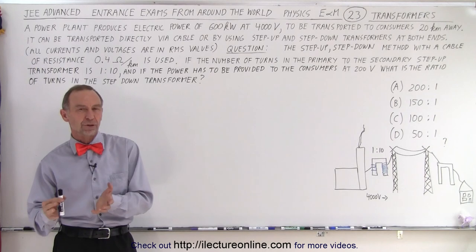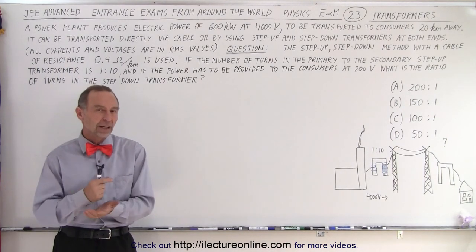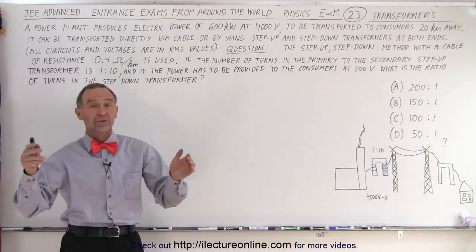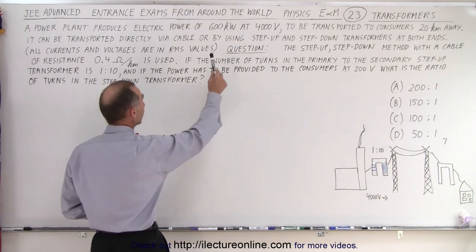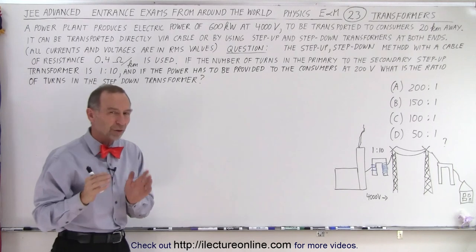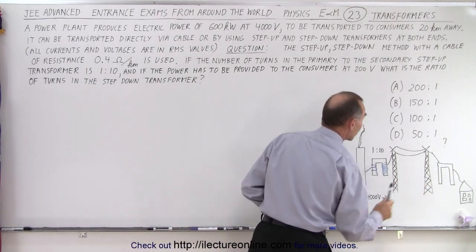This is a follow-up question from the one where we have to calculate the power loss on the transmission lines if we use the direct method from factory to customer across the line at 4000 volts. So here again we're transporting 600 kilowatts of power, but instead of doing the direct method at 4000 volts, we're going to use a step-up and a step-down transformer.